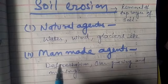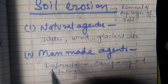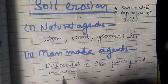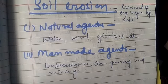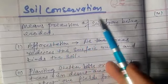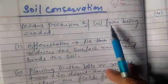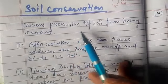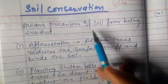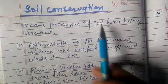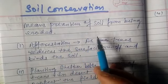There is an urgent need to conserve the soil from erosion, and it has become one of the major environmental concerns to protect soil from being eroded. The next very important topic is soil conservation. Soil conservation means the prevention of soil from being eroded.